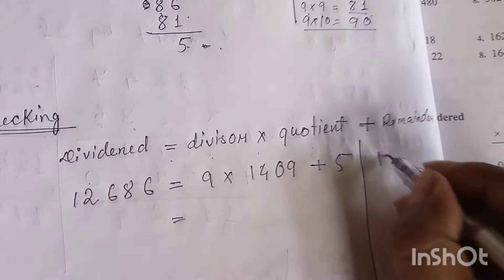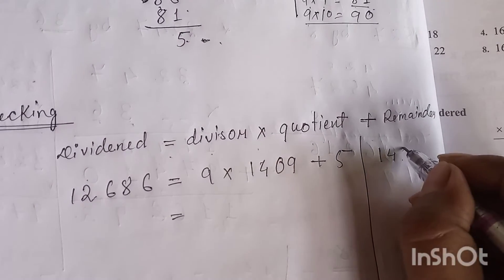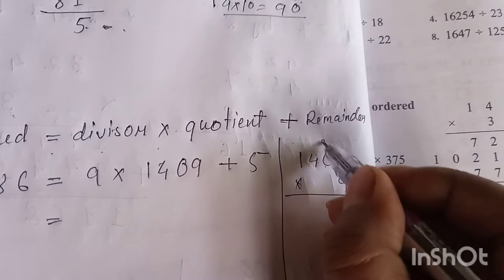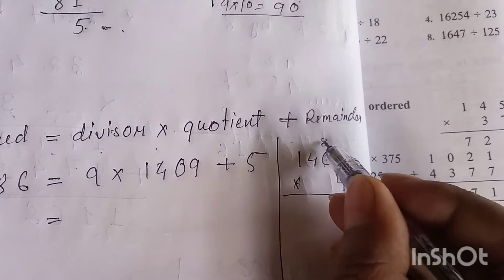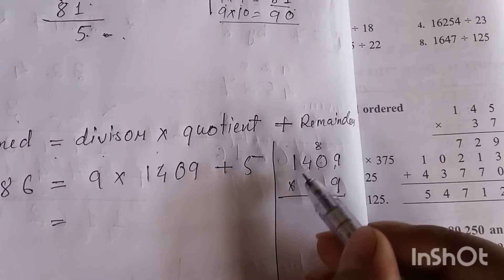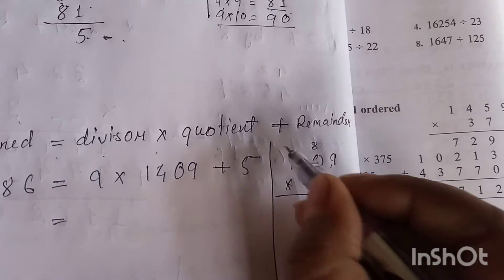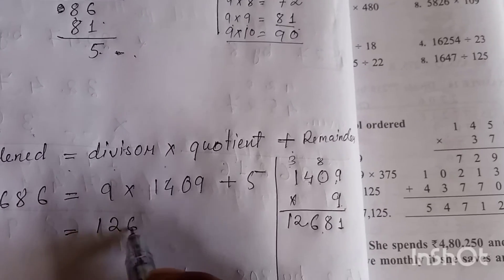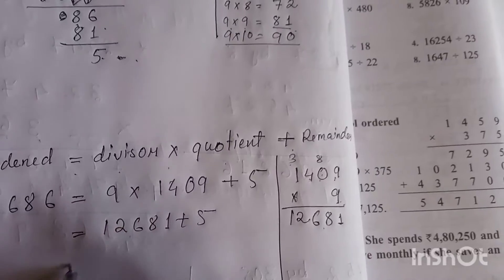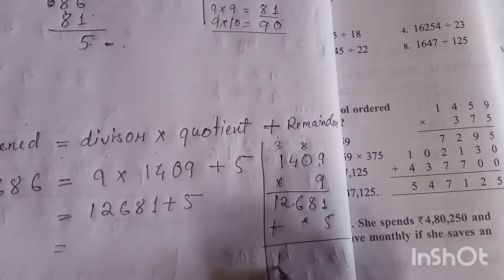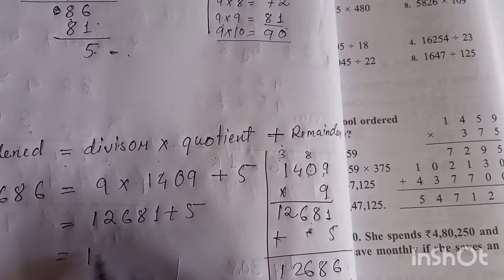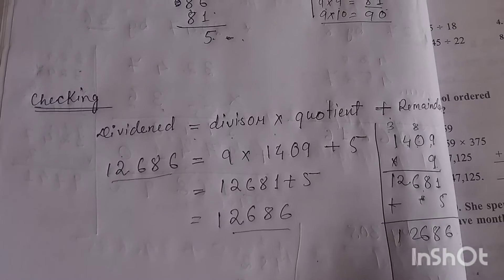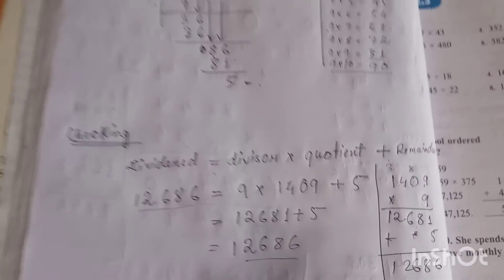Calculating: 9 times 1,409 gives 12,681, and adding the remainder 5 gives 12,686. Since this matches the dividend 12,686, the answer is correct.